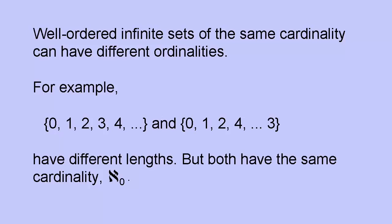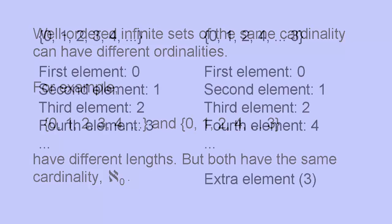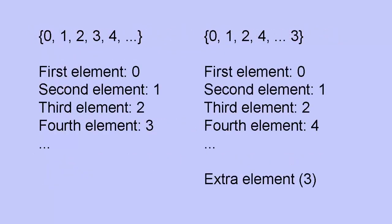Think of it another way. With the first set, {0, 1, 2, 3, 4, ...}, there's a first element, zero, a second element, one, a third element, two, a fourth element, three, and so on. With the second, there's also a first, zero, second, one, third, two, fourth, four, etc. However, there's one element, three, that is none of these. The ordinal we assign to three, not the value of the number, but the order in which it appears, is greater than anything that comes before it.